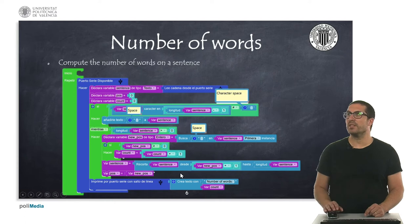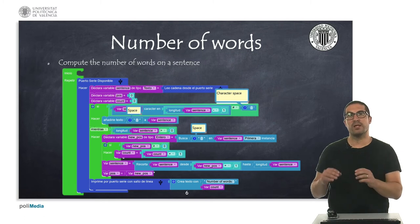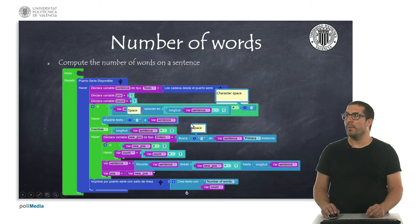In this second example, we are counting the number of words. In this case, we are using the space character as a delimiter. We are assuming that there's no double spaces and no final space at the end of a sentence. That's why we use at the beginning to add a space at the end of the sentence to count the last word.